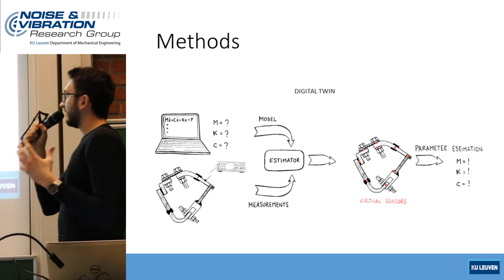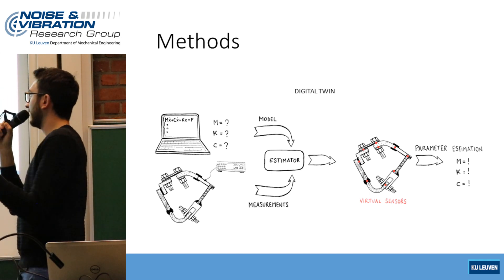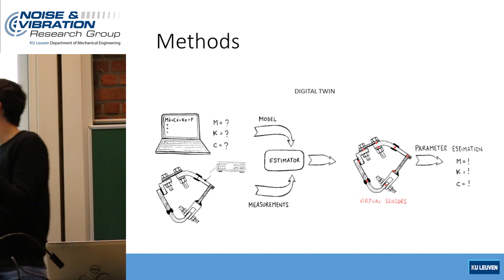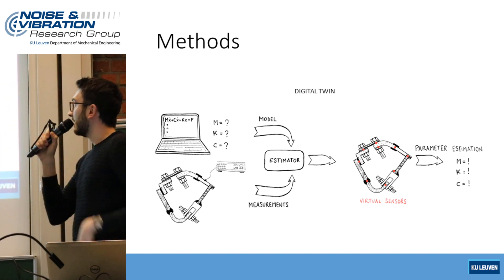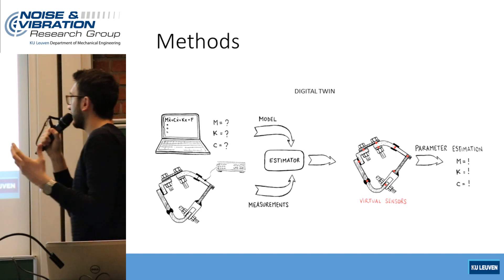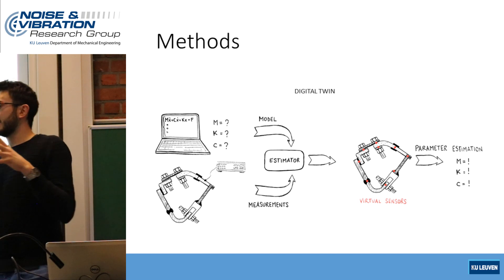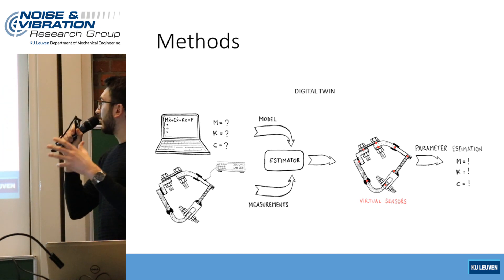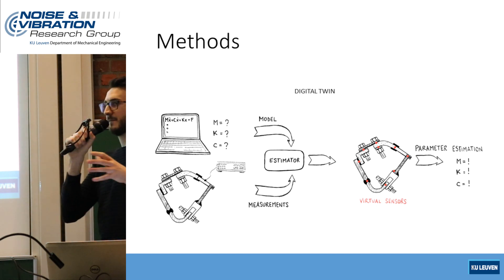The digital twin is a combination of model and measurements where the information coming from them are combined together and elaborated in an estimator, together with the uncertainties of the model and the measurements that are expected. Then the estimator gives us as an output virtual sensors that we can use to have better parameter estimation of our conceptual models.